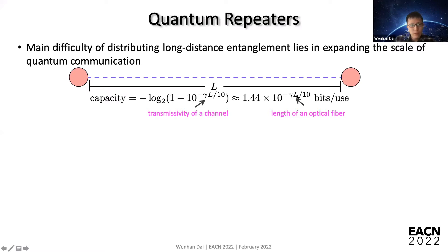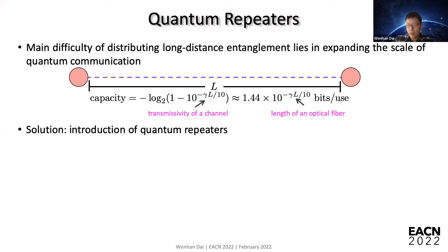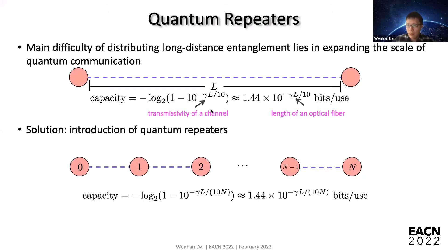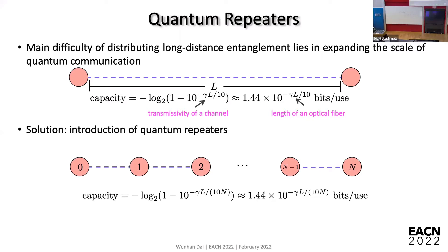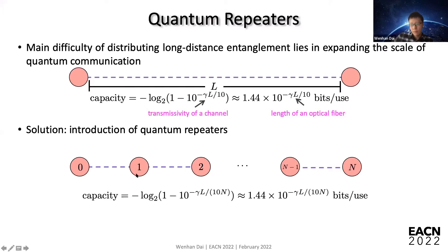To overcome this issue, people introduced the concept of quantum repeaters. What you do is insert a lot of repeaters between two nodes, then generate entanglement only between neighboring nodes. Then you do entanglement swapping, which is sort of like teleportation — you perform a Bell measurement and send results to neighboring nodes. By consuming two entanglements between neighboring nodes, you can create entanglement between nodes that are far apart.